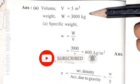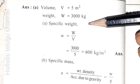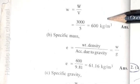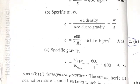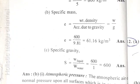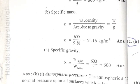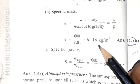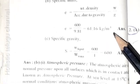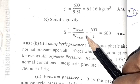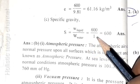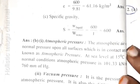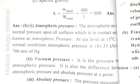V equals 5 m³, W equals 3000 kg. Specific weight is W by V, which equals 3000 divided by 5 equals 600 kg per m³. Specific mass is weight density divided by acceleration due to gravity, which equals W by g. So 600 divided by 9.81 equals 61.16 kg per m³. Specific gravity is weight of liquid divided by weight of water, so 600 by 1, which equals 600.